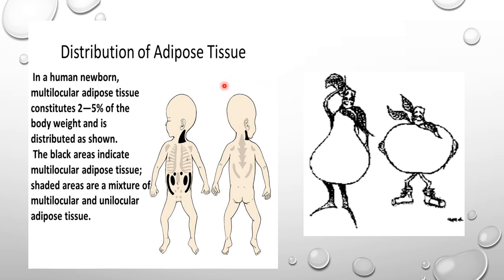This diagram shows the distribution of adipose tissue in newborns, where it constitutes two to five percent of body weight shown by black areas, whereas gray areas show a mixture of multilocular and unilocular adipose tissue. Sufficient white adipose tissue has formed in newborn babies, and white adipose tissue starts forming at the 14th week of gestation. Another diagram shows the male and female distribution of fat — the pear-shaped distribution in females and the apple-shaped distribution in males — which is under hormonal control of male and female sex hormones.